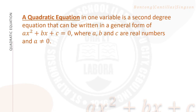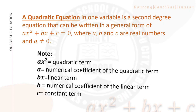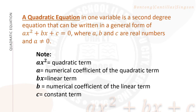Now take note of these terms. Ax squared is the quadratic term; a is the numerical coefficient of the quadratic term. Bx is the linear term; b is the numerical coefficient of the linear term. And c is the constant term.